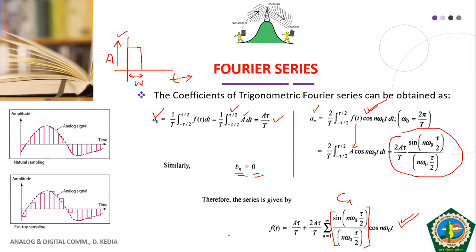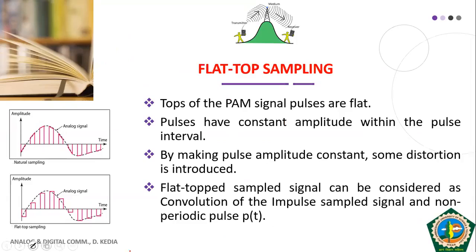After discussing the trigonometric Fourier series representation of the carrier pulse train, we now move forward. Having covered natural sampling, we will now discuss flat-top sampling in detail.